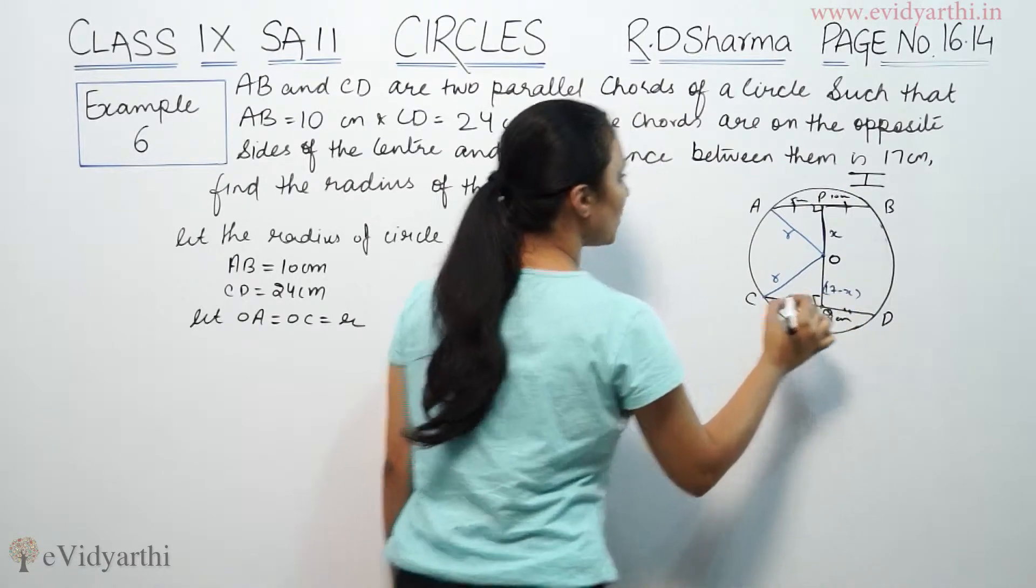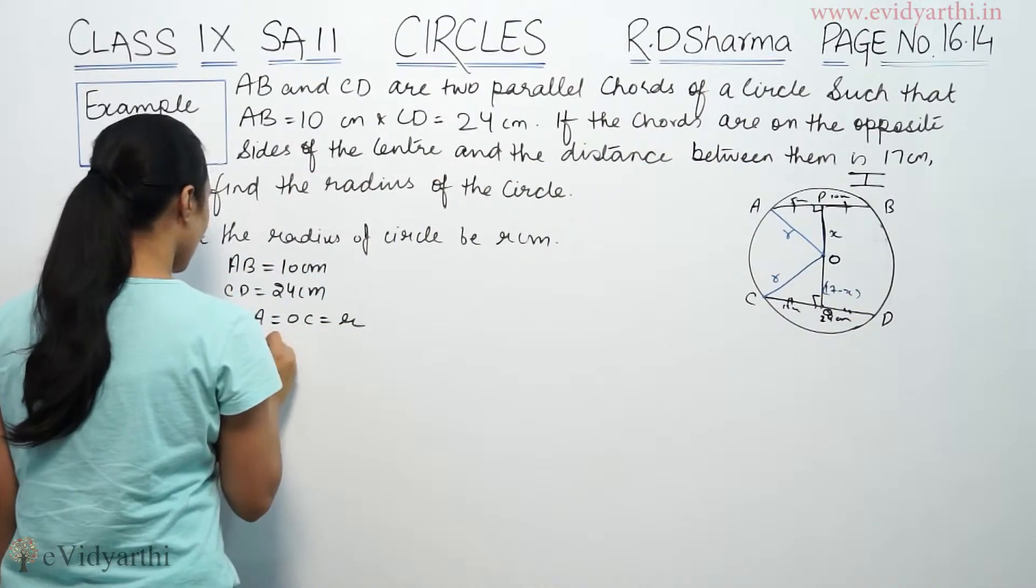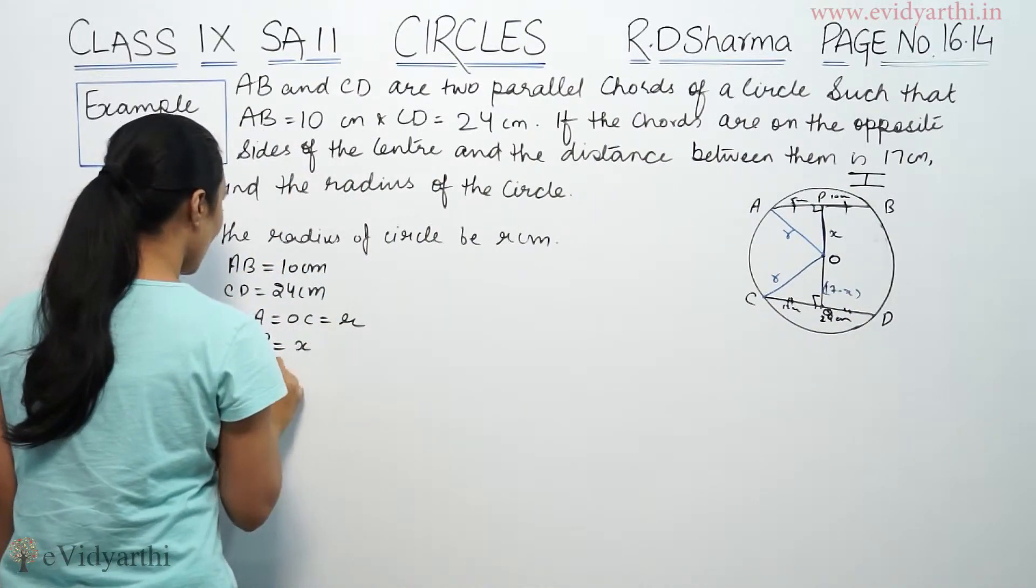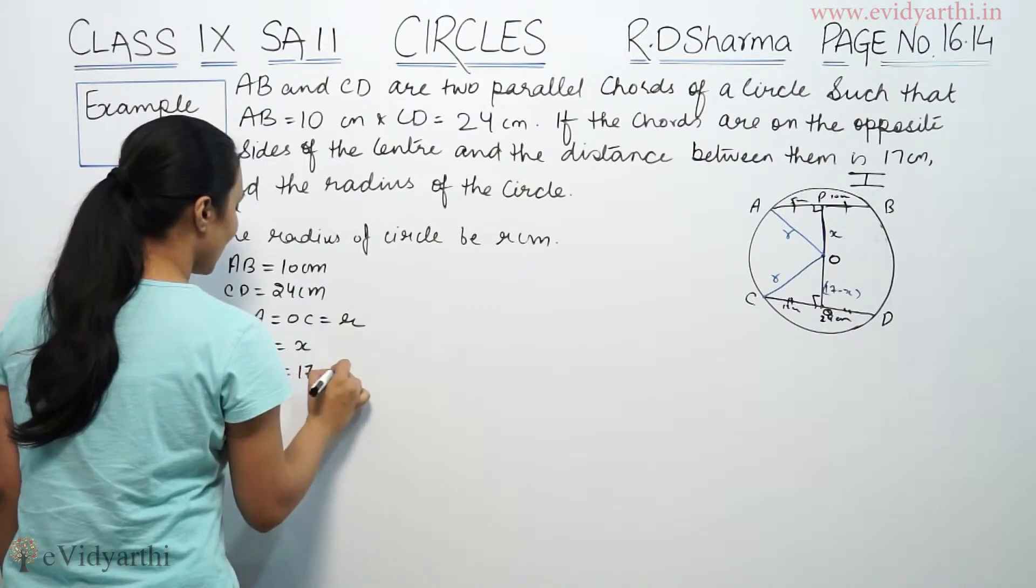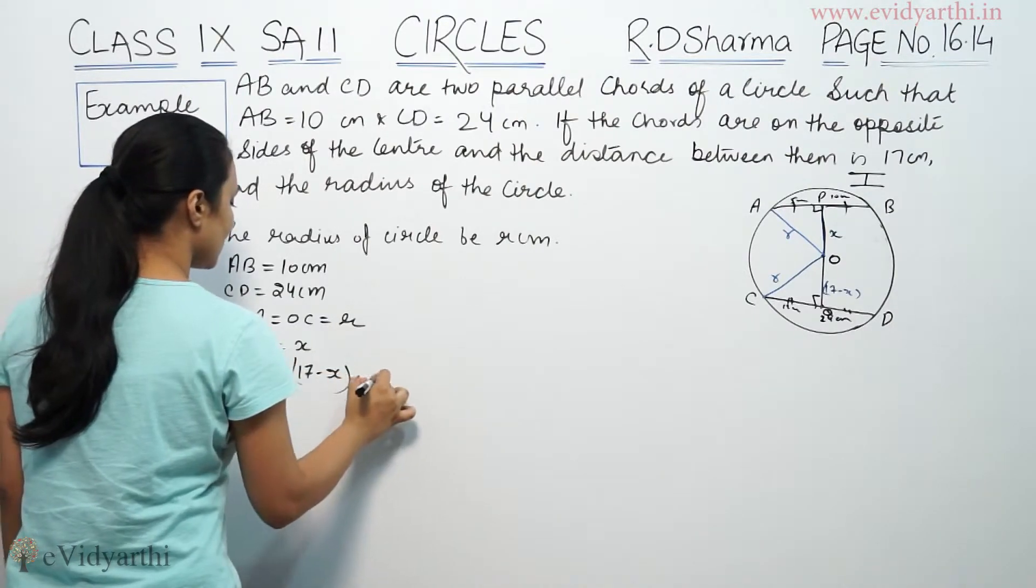O is called P. I suppose this Q. OP is x. OP is x so OQ will be 17 minus x centimeters.